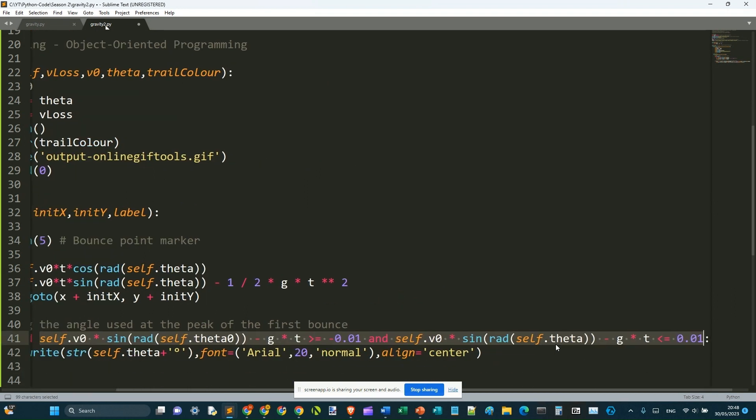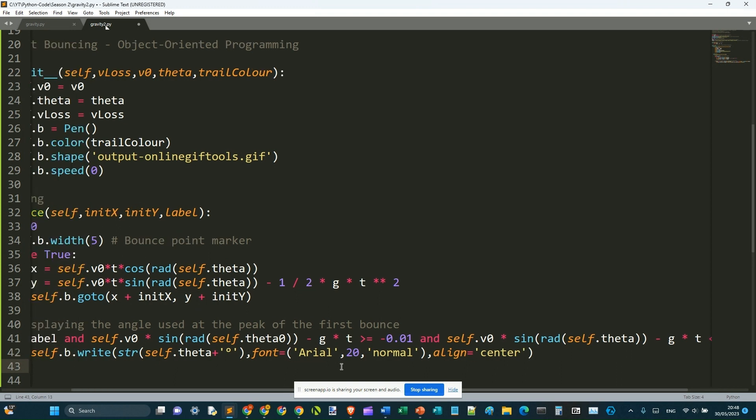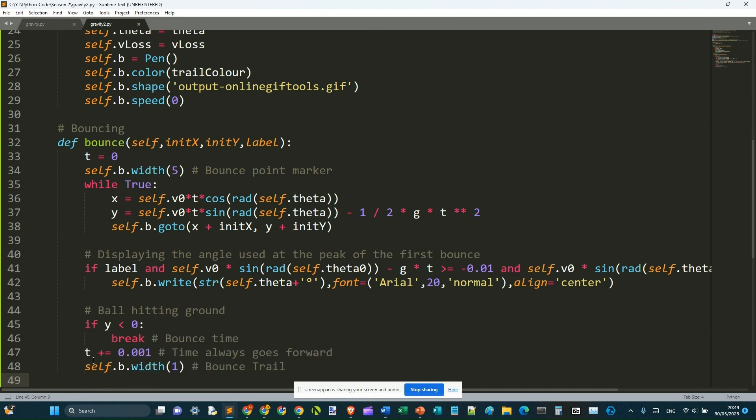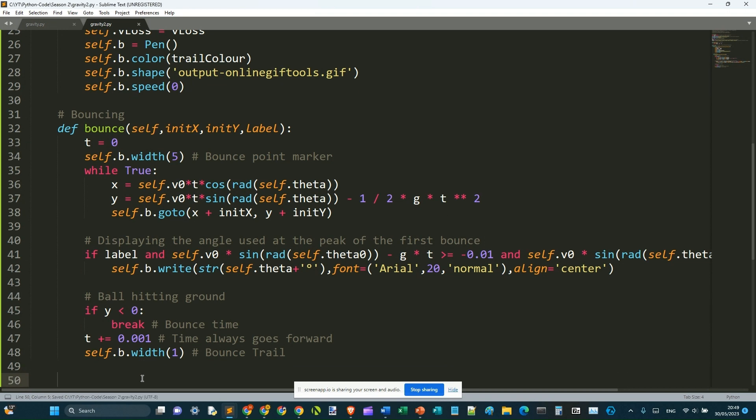If you're confused, if the value of this equation is 0, then the ball is at the peak of the bounce trajectory. I'm just going to give you some time to read all my comments for this part of the code. And that's bouncing done.